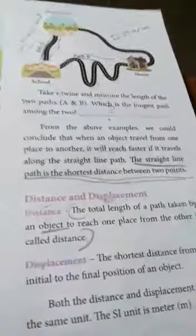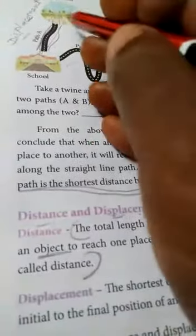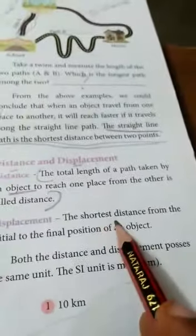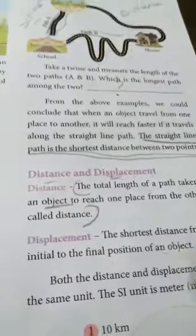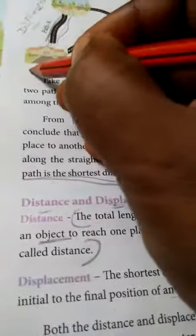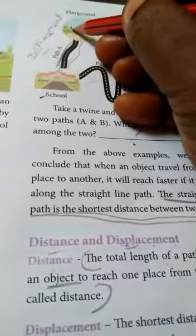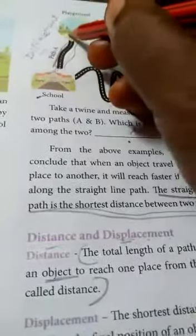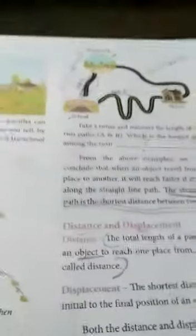The total length of the path taken by an object from one place to the other is called distance. But displacement means the shortest distance from the initial to the final position of an object. Distance means the total path length — the longest route — while displacement means the shortest straight-line path.